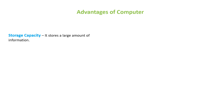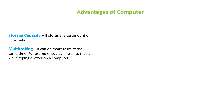A computer can store a large amount of data and information. Multitasking: it can do many tasks at the same time. For example, you can play music on the computer and simultaneously make a drawing also on the computer — you can do two things together.